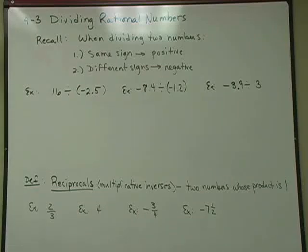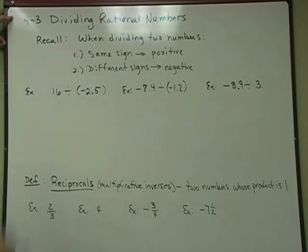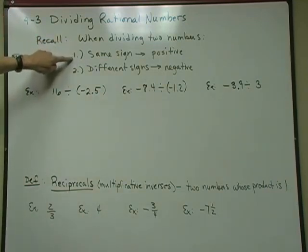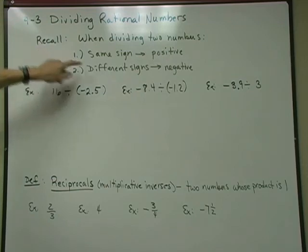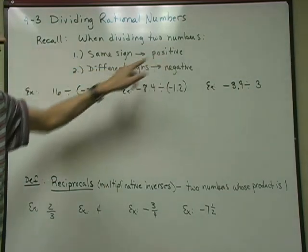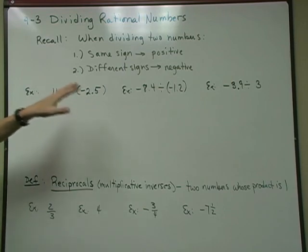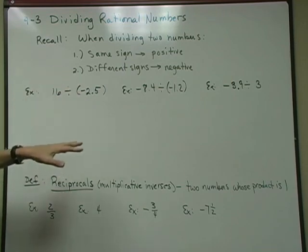Chapter 4, Section 3: Dividing Rational Numbers. Remember, when you're dividing two rational numbers, if they have the same sign, your answer's going to be positive. If they have different signs, it's going to be negative. We're going to give you a quick review on what to do if you're dividing decimals and fractions.